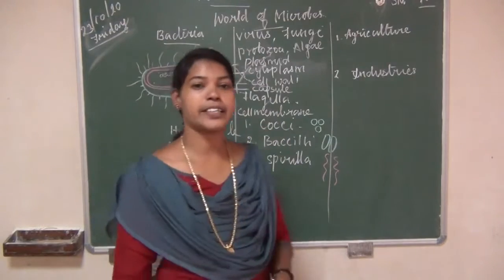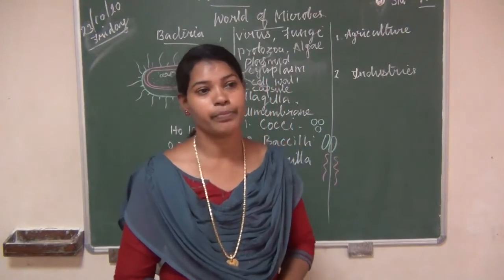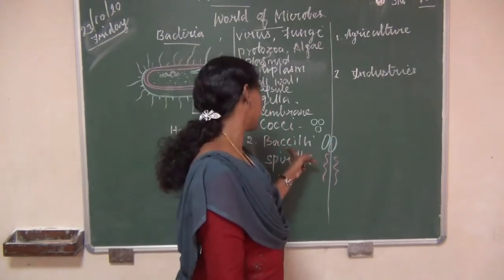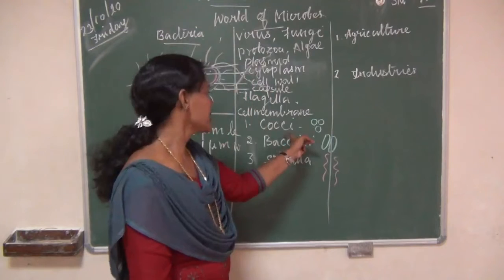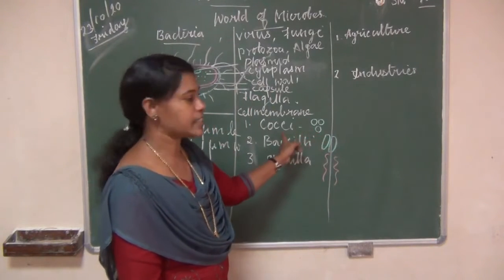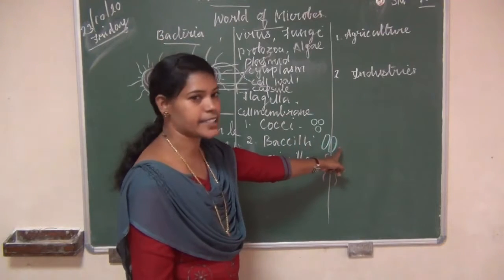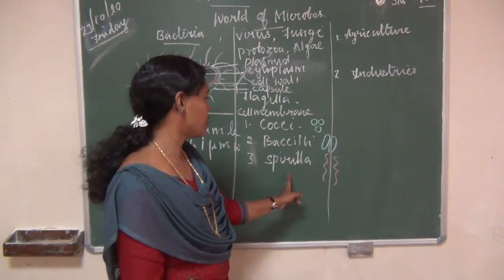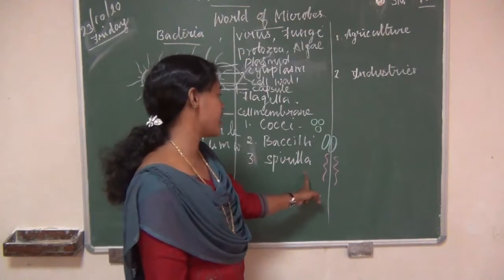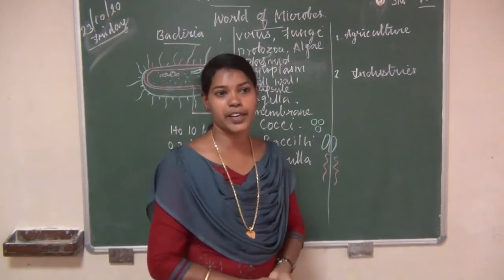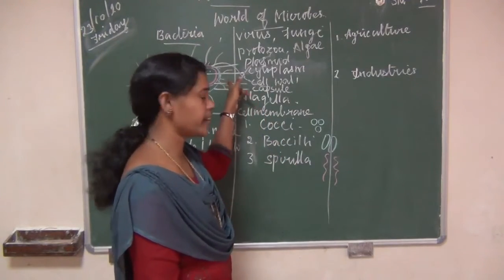What are the types of bacteria? There are three types: coccus, bacillus, and spirilla. Coccus: spherical-shaped cells. Bacillus: rod-shaped bacteria. Spirilla: spiral-shaped bacteria. What is plasmid? Circular chromosomal DNA found in the cytoplasm.